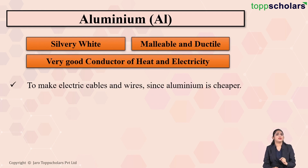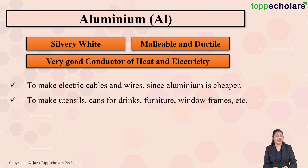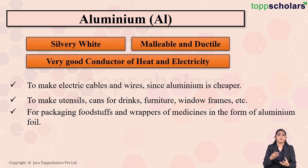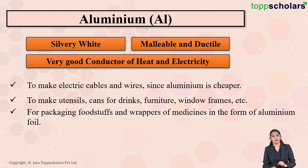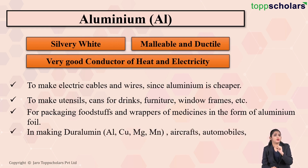Aluminium is a common substitute for copper in electrical applications. Aluminium is also used for making utensils, cans for drinks, furniture, and window frames. Aluminium is used for packaging purposes — since it is a good conductor of heat, we cover food with aluminium foil to keep it warm. Some wrappers for medicines and food packages are also made from aluminium.